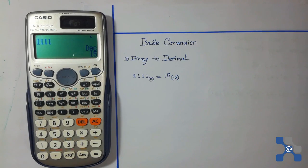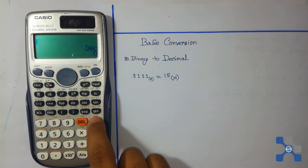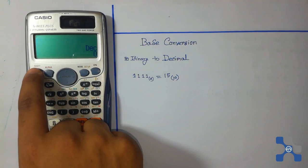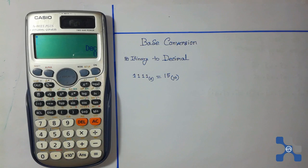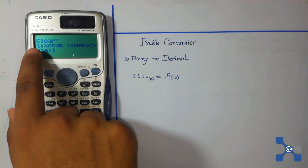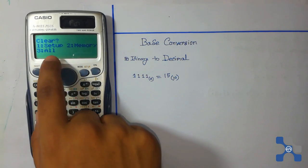If you press the On button, you see that the calculator is not in normal mode. So if you want to go back to normal mode, you need to press Shift, then press 9, and then press 1 or 3. I am going to press 3, and then press equal button.